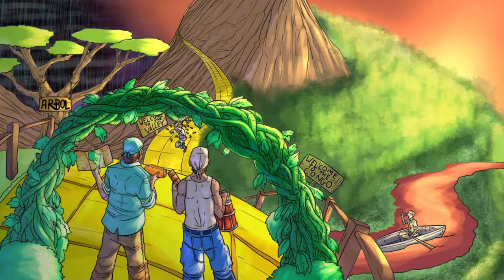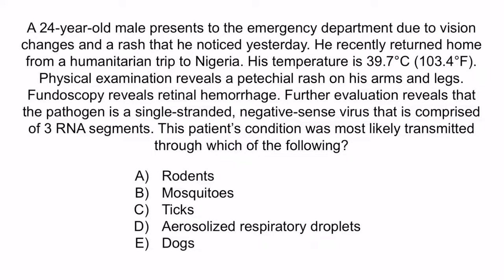From the image, recall that the guy in the boat is eating Tic Tacs, which should help you remember that Crimean-Congo Hemorrhagic Fever is transmitted through ticks. A is a reference to hantavirus, which can be very similar to Crimean-Congo Hemorrhagic Fever, but it's much more common in China than in Africa, so A is incorrect. B is true of many viruses and other bunya viruses such as Rift Valley Fever virus, but these do not present with hemorrhagic fever, so B is incorrect. D is also true of many viruses such as influenza, but bunya viruses are not transmitted through aerosolized respiratory droplets, so D is incorrect.